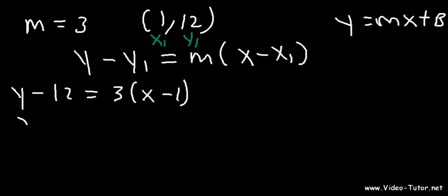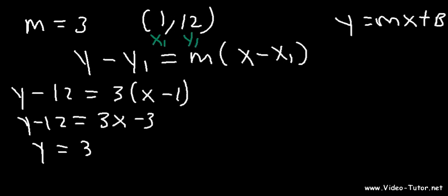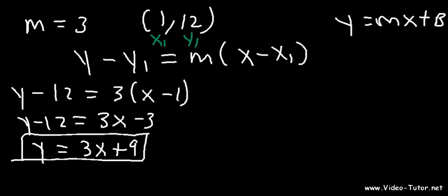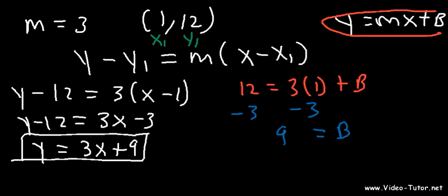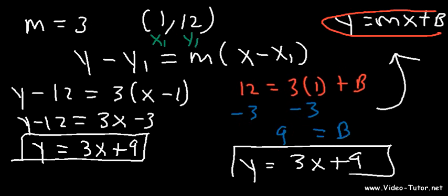If you want to find it in slope-intercept form, let's distribute the 3. It's going to be 3x minus 3. Then let's add 12 to both sides. Negative 3 plus 12 gives us the equation in slope-intercept form. We can get the same equation using y equals mx plus b — plug in y as 12, slope as 3, x as 1, and solve for b. Subtracting 3 from both sides, b is equal to 9. Then plug in slope 3 and b equals 9, and we get the same answer.